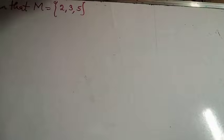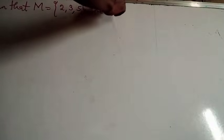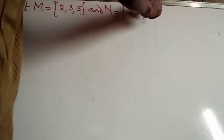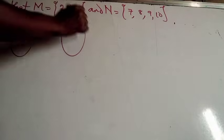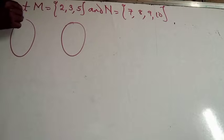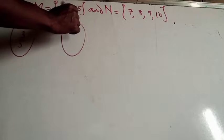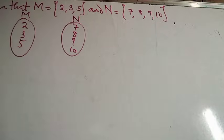Now, given that M is a set of elements 2, 3, and 5, while N is a set of elements 7, 8, 9, 10. Now, using arrow diagram form, let's draw these diagrams. These diagrams are like circle-shaped ones, where we are going to put the elements of sets M and N respectively. This is for M, this is for N. So, we have 2, 3, 5, and here we have 7, 8, 9, 10.